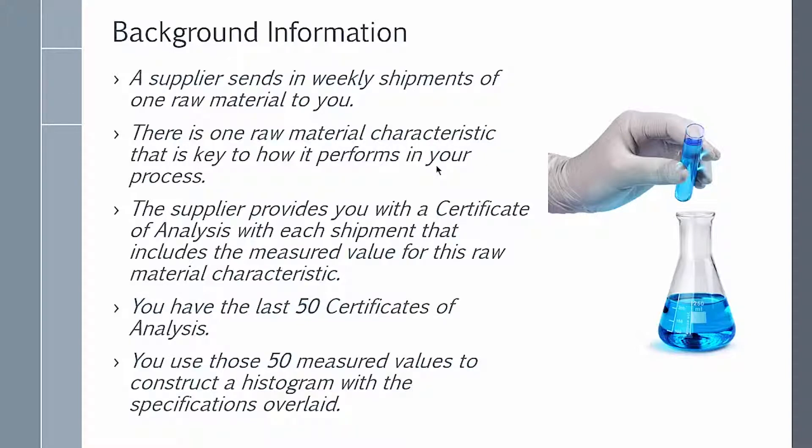Here's some background information before we show you those histograms. First is the supplier sends in weekly shipments of one raw material to you. It's important in your process, and he provides you with a certificate of analysis with each shipment that includes the measured value for that characteristic. You have the last 50 certificates of analysis, and you're going to use those to construct a histogram and put your specifications on top.